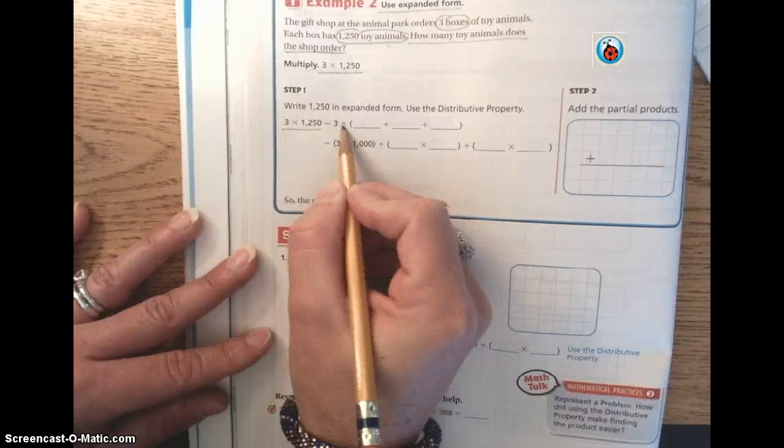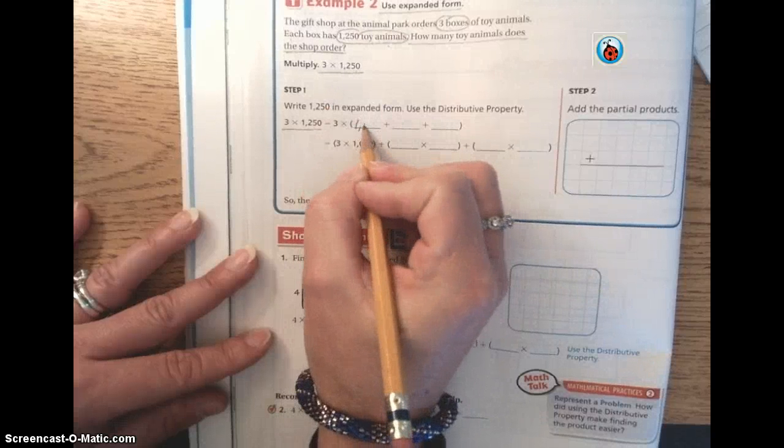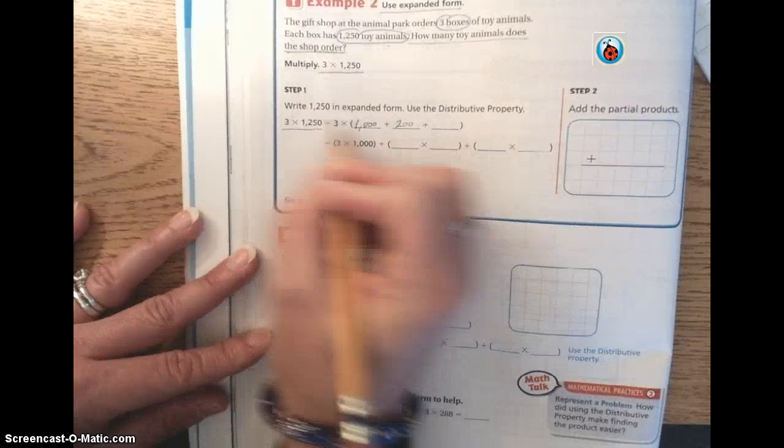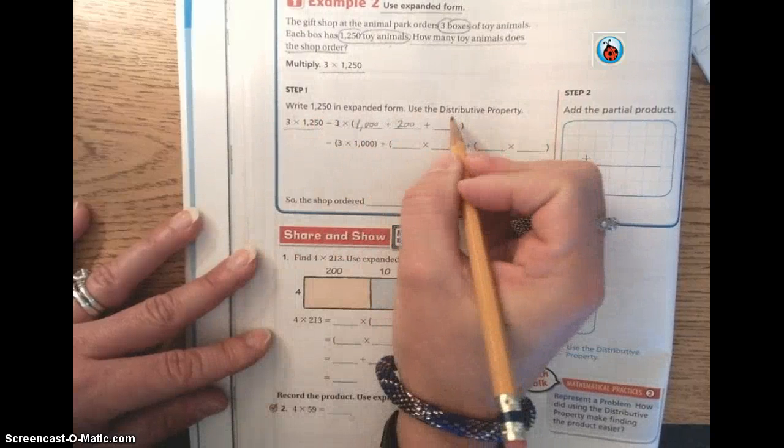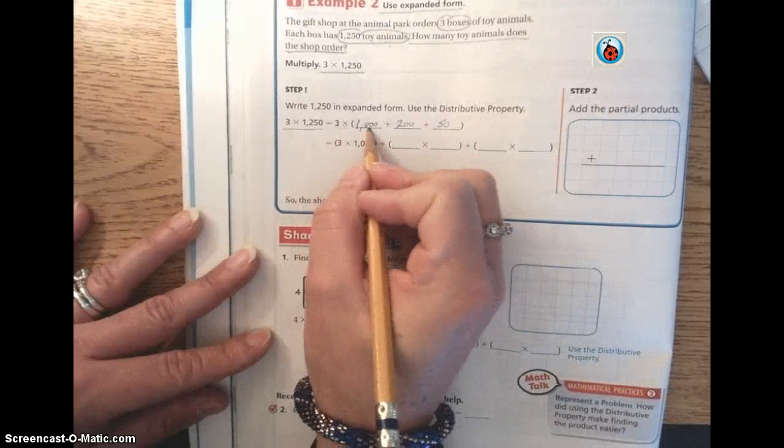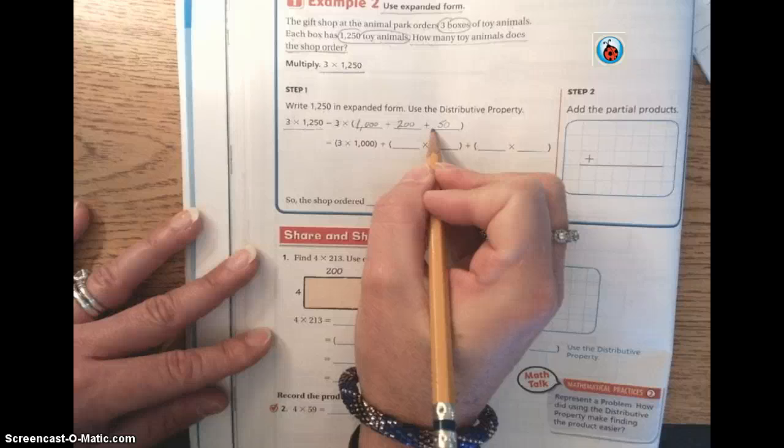We have 200 is our next part of 1,250. And lastly, we have 50. So we have three times 1,000 plus 200 plus 50.